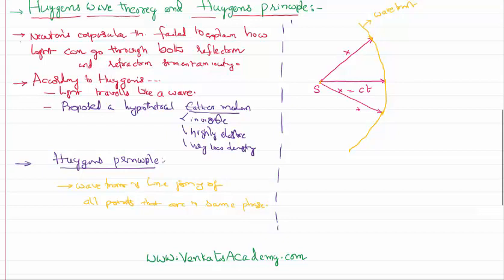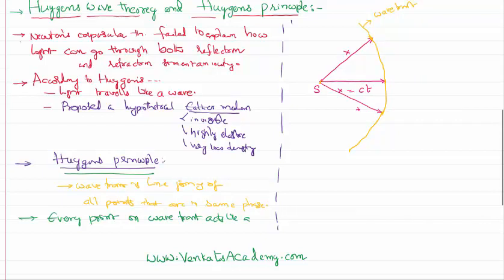Now, according to Huygens principle, every point on the wavefront acts like a source itself and propagates the light further in a forward direction. So the wavefront is again going to act like a secondary source and propagates the light further in a forward direction.